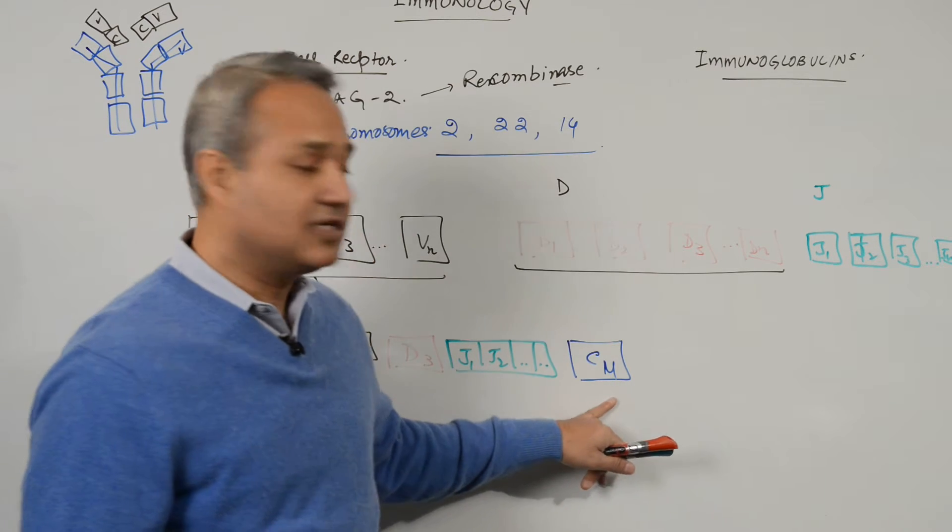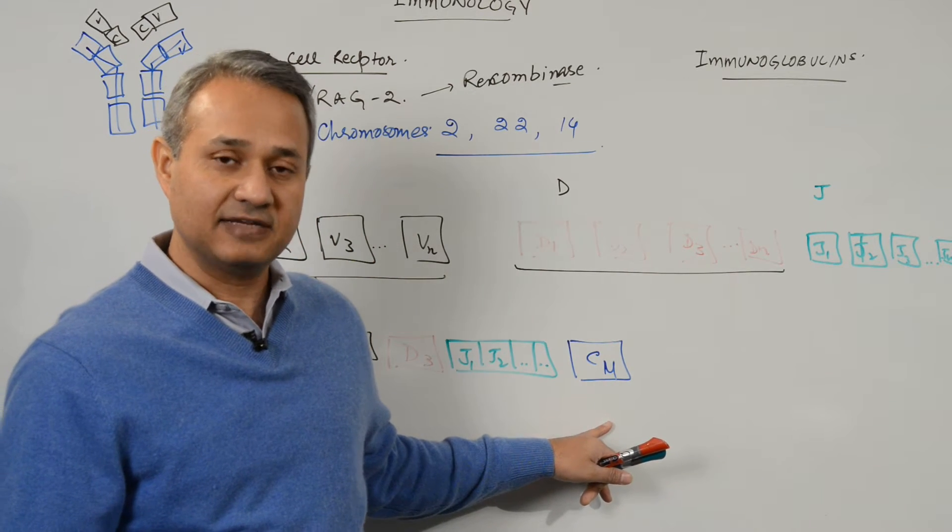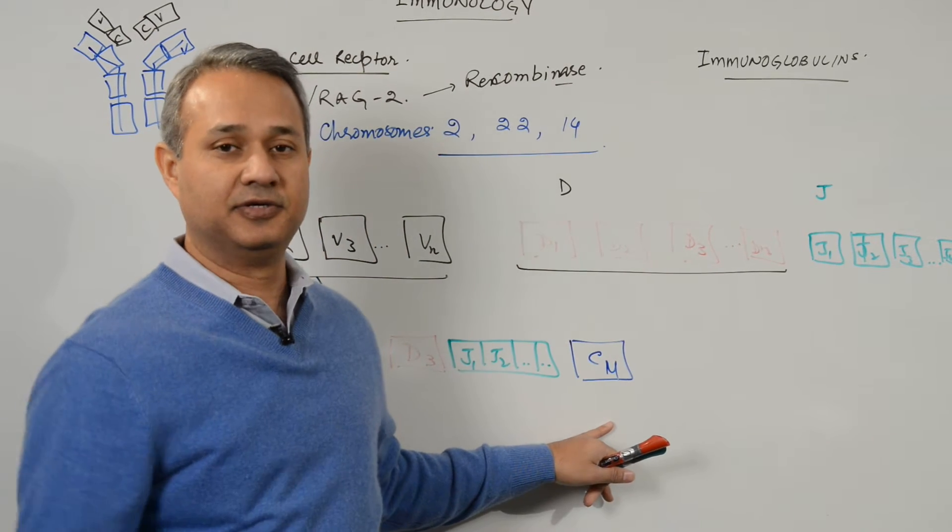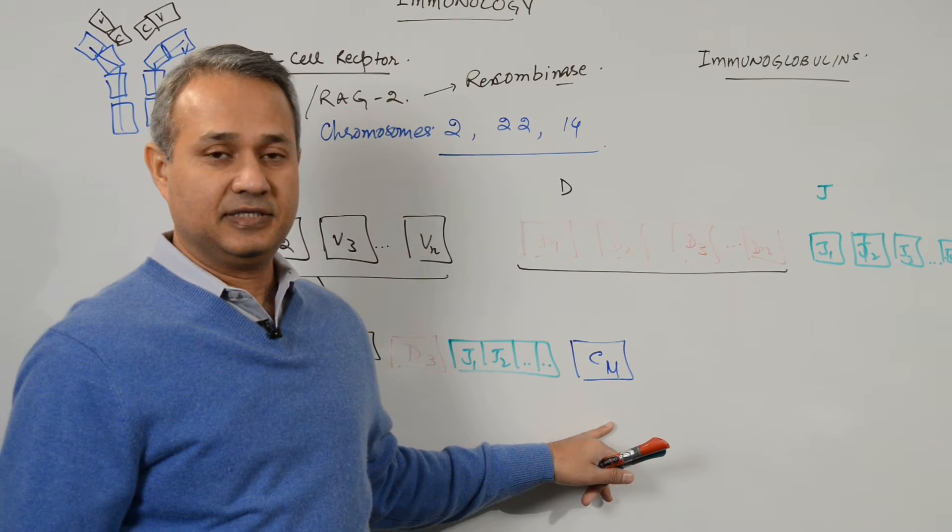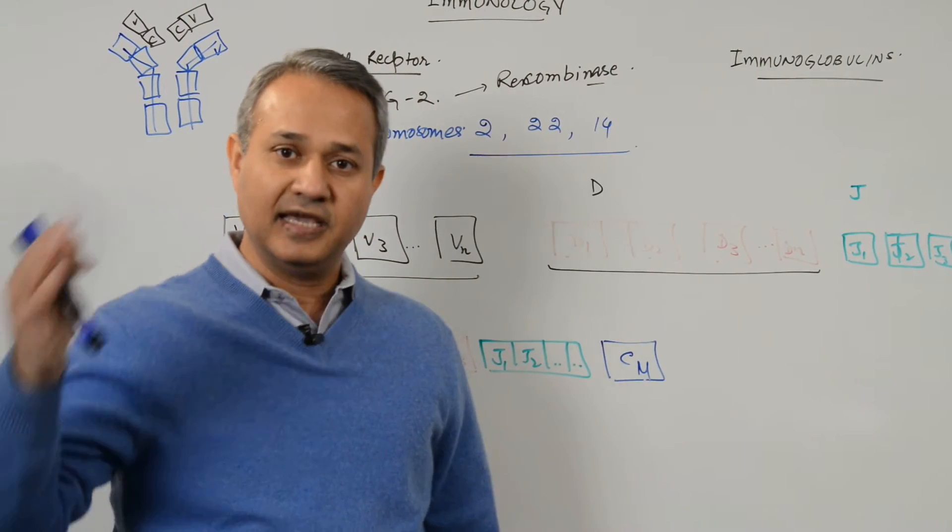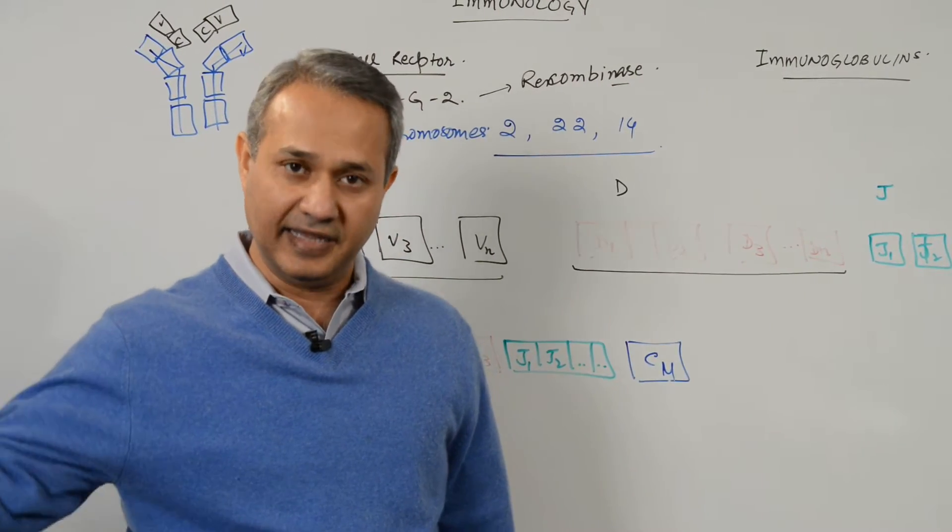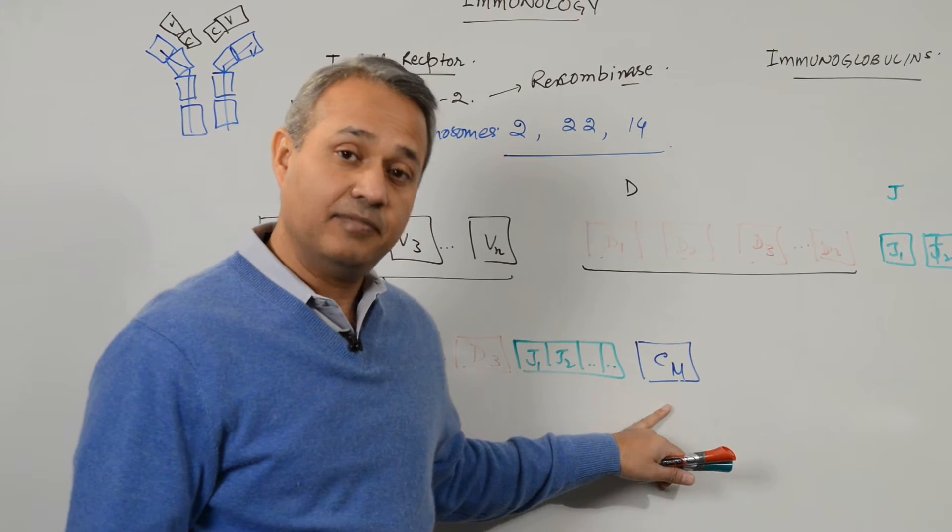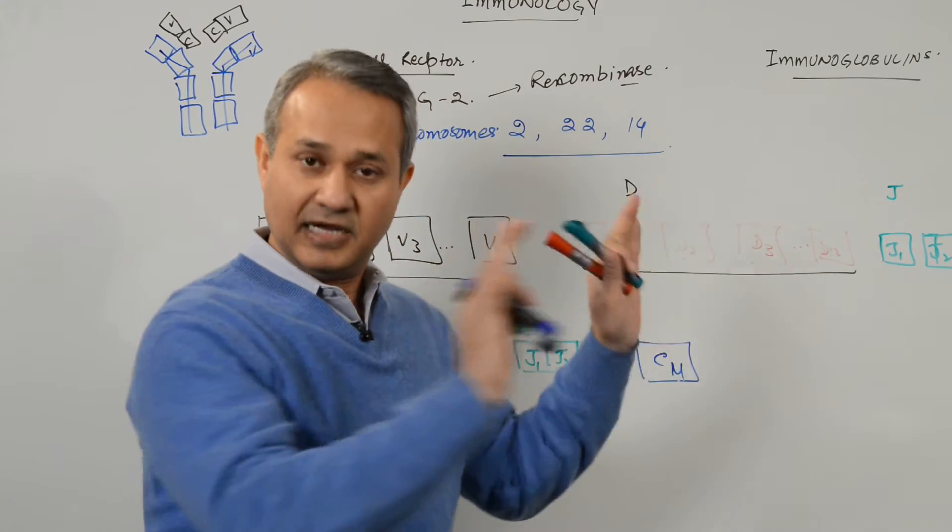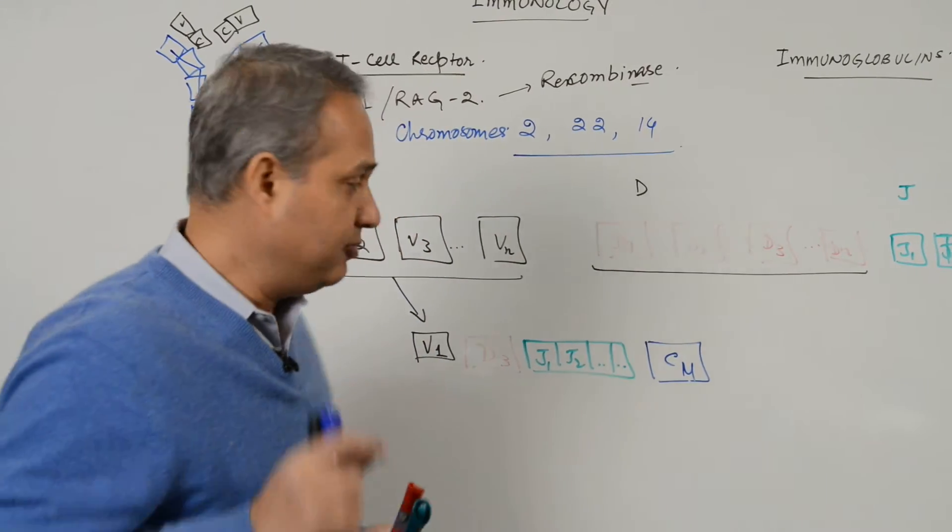Why? The very first time when a B cell becomes active and starts making immunoglobulin, it makes M and D and then it would do class switching. From M it would go to G and from there it would go to E and then A, but in the beginning it can make M and D and that is because of alternate splicing. We will talk about that when we go to the immunoglobulin.